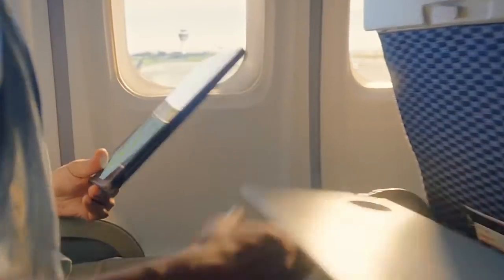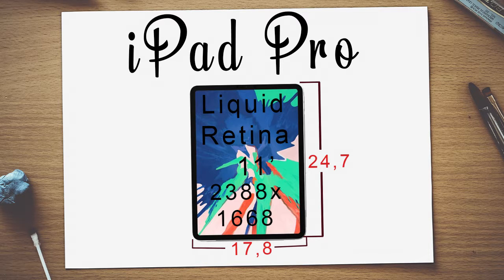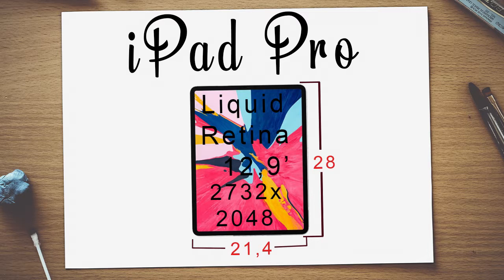There are cheaper versions of iPads but today we are focusing on the high-end devices. There are two versions of iPad Pro: the 11-inch screen, which is 24.7 cm high and 17.8 cm wide, weighs 468 grams, and comes with a Liquid Retina display at a resolution of 2388 by 1668. The other version is 12.9 inches, 28 cm high and 21.4 cm wide, weighs 631 grams, and also comes with a Liquid Retina display at a resolution of 2732 by 2048.